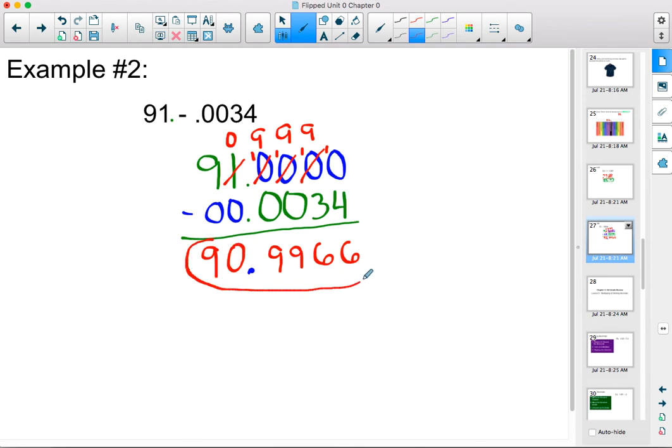Feel free to watch this example a couple times. Like I said before, this is the most frequently type of missed problem in this lesson. It starts with the lining up at the decimal places, and it continues with the adding the zeros and the borrowing. So make sure you're familiar with this. You will see these on upcoming quizzes.